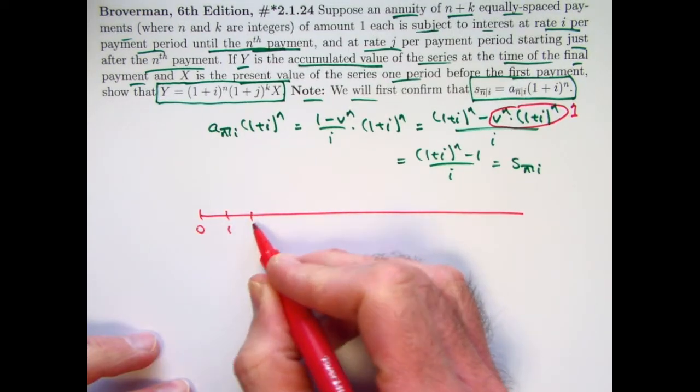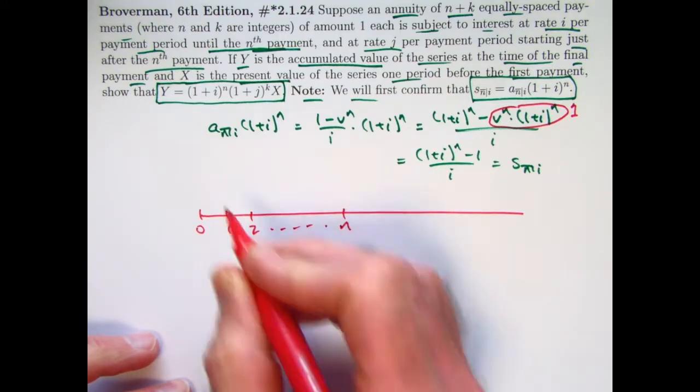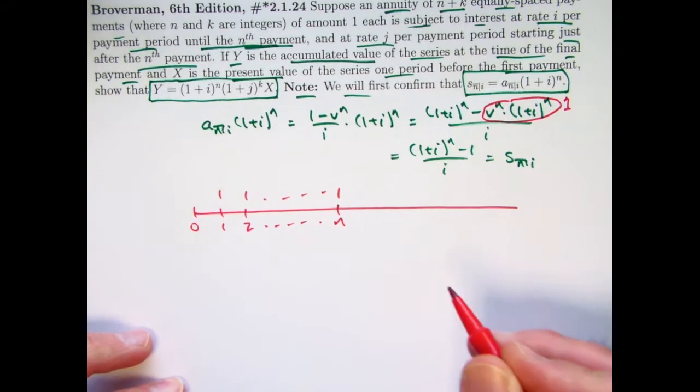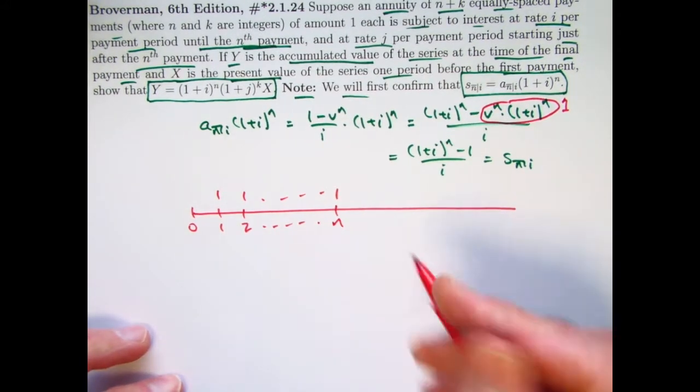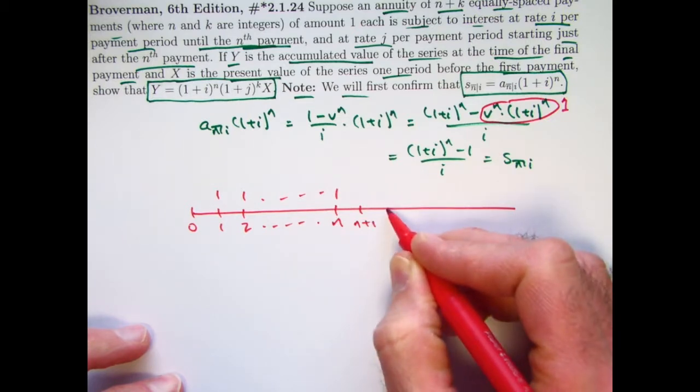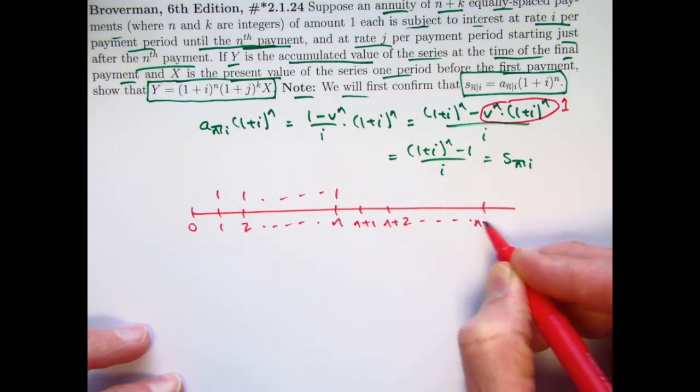We've got our timeline here. We've got the first n periods with n payments of 1 for which the interest rate i is valid, and then we've got the next series of k years with payments at the end of each year.